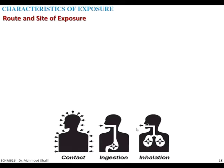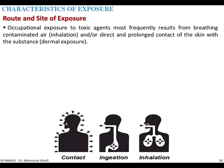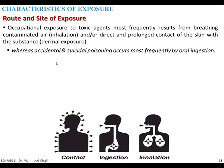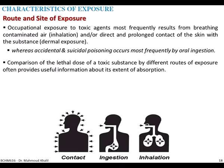Here is a schematic figure of the routes of exposure — either inhalation, ingestion, or by contact. Occupational exposure frequently results from breathing contaminated air by inhalation or by direct dermal contact with the substance. Accidental and suicidal poisoning occurs most frequently by oral ingestion. Comparison of the lethal dose of a toxic substance by different routes of exposure often provides useful information about the extent of absorption.